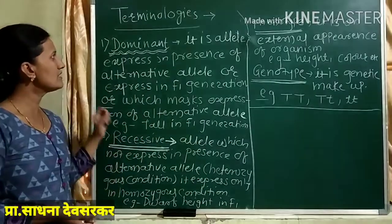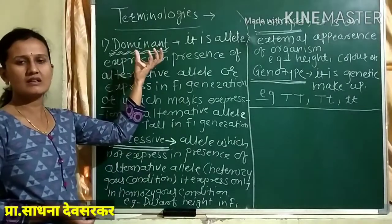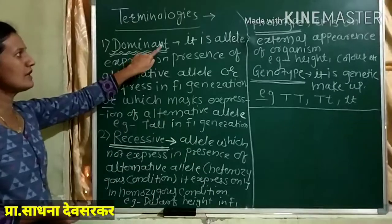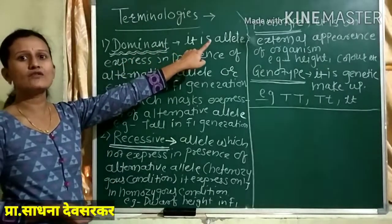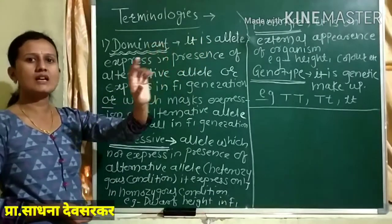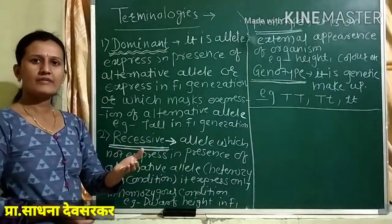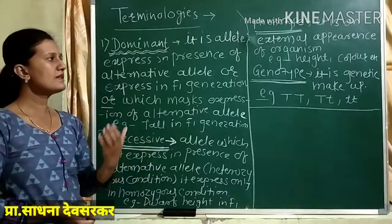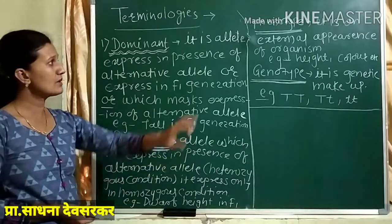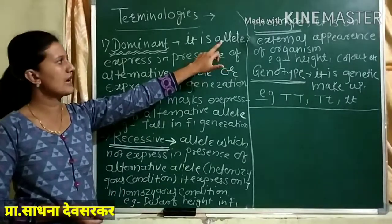What is the dominant one? According to the English word, we know dominance. It is an allele. Yesterday we learned what an allele is — allele means alternative form of the same gene. One gene is the same; that may be T, T, T. Alleles are for the same character, such as height.